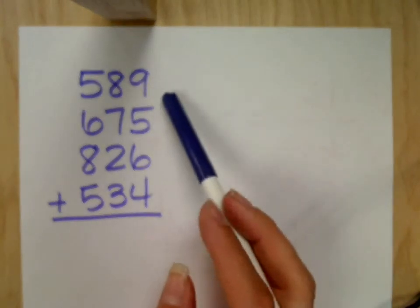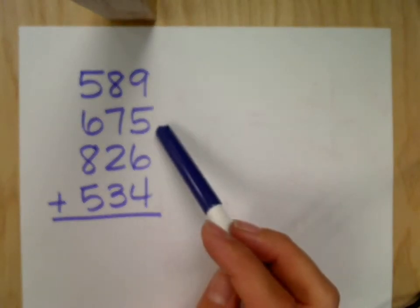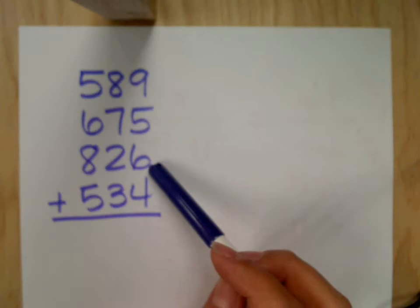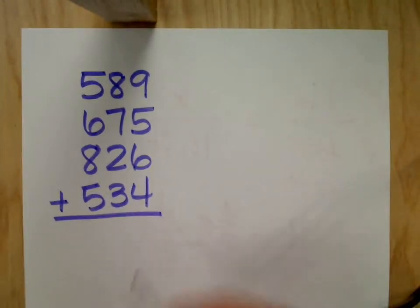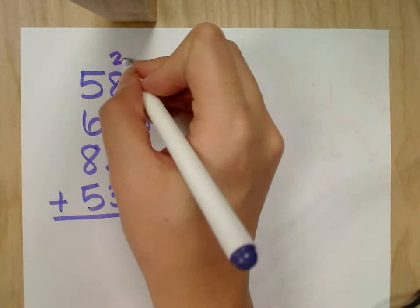So just very carefully add up nine and five. Fourteen. Okay, fourteen plus six. Four. Plus four. Four. Carry two.